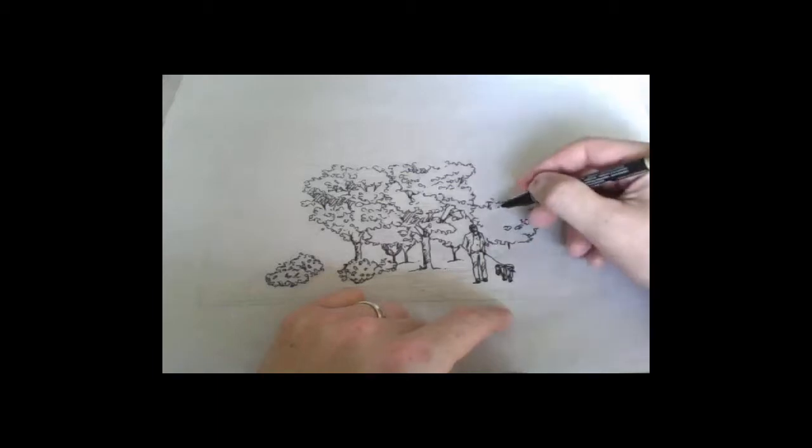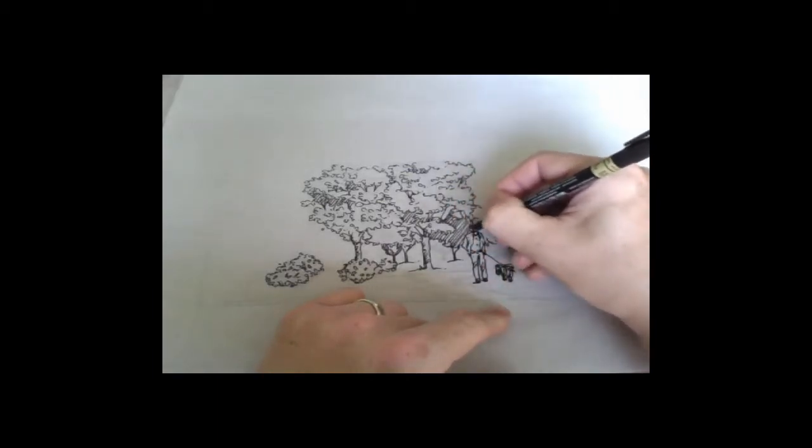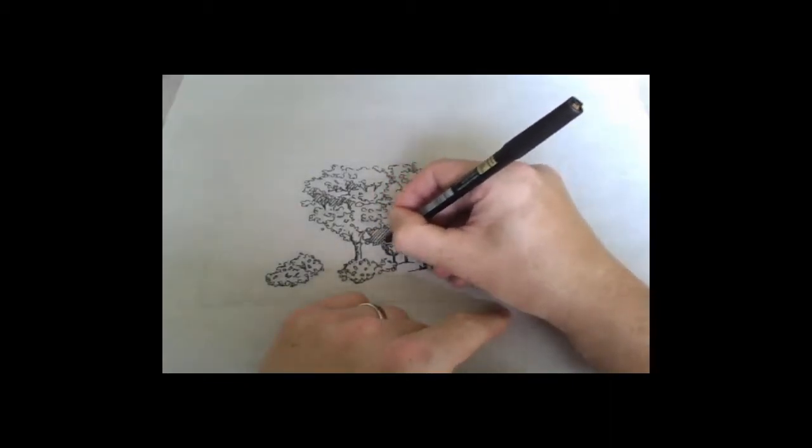But you still have to have that base ability to make the graphic line marks. More 45 degree stroke in the background for some of the background trees, trying to differentiate the space a little bit.